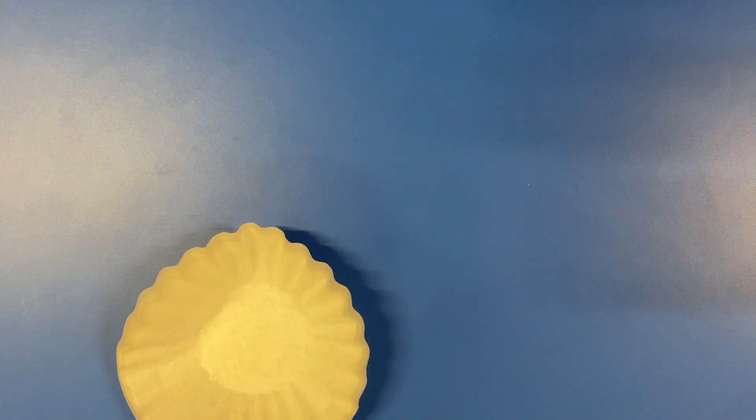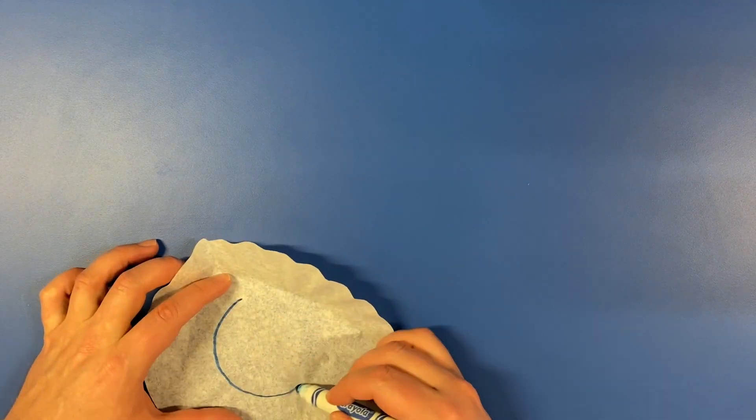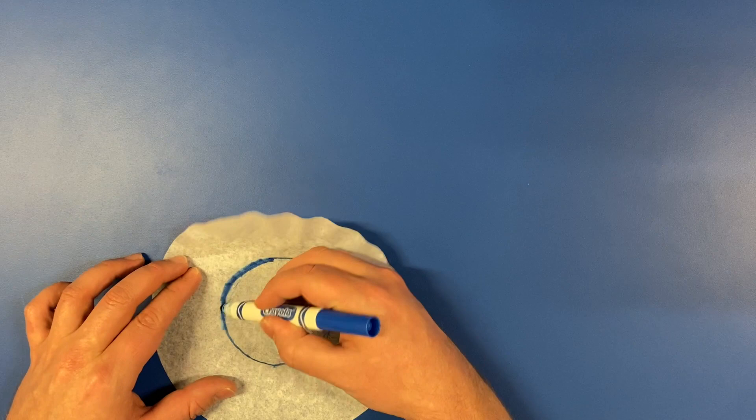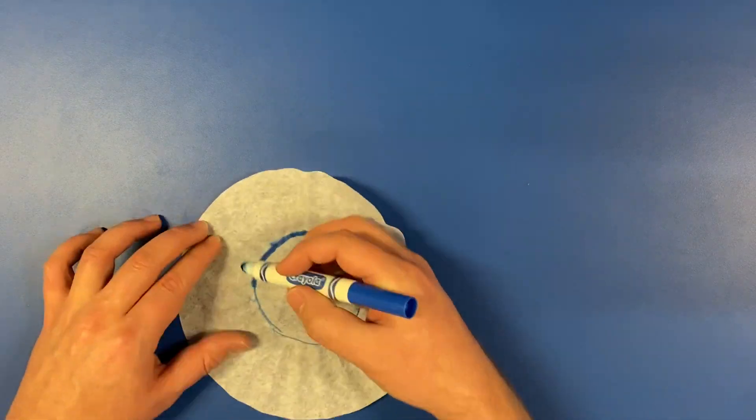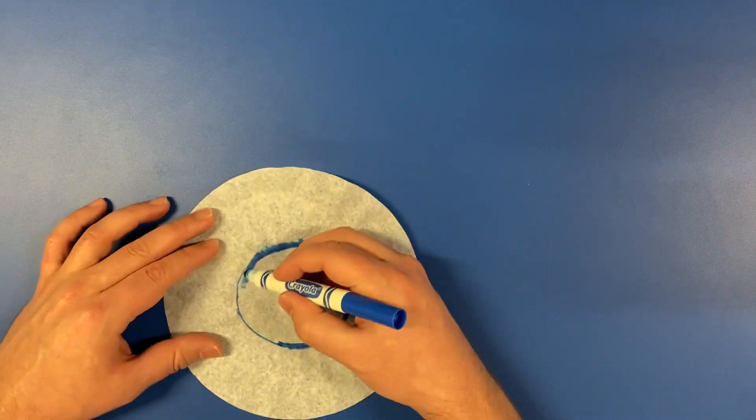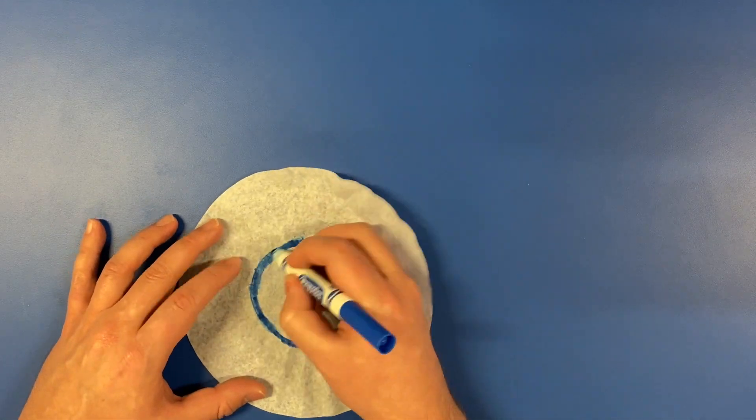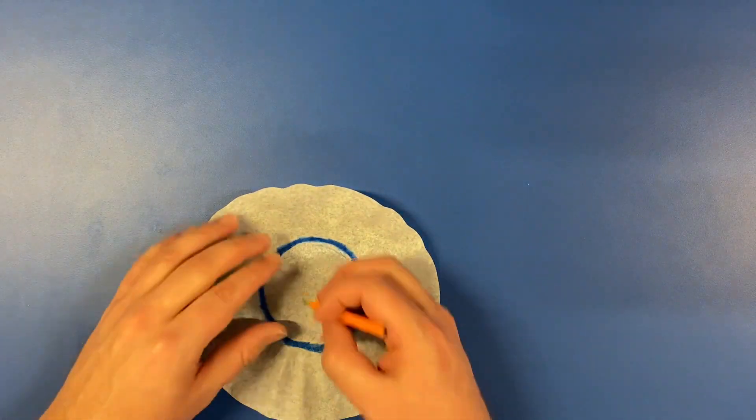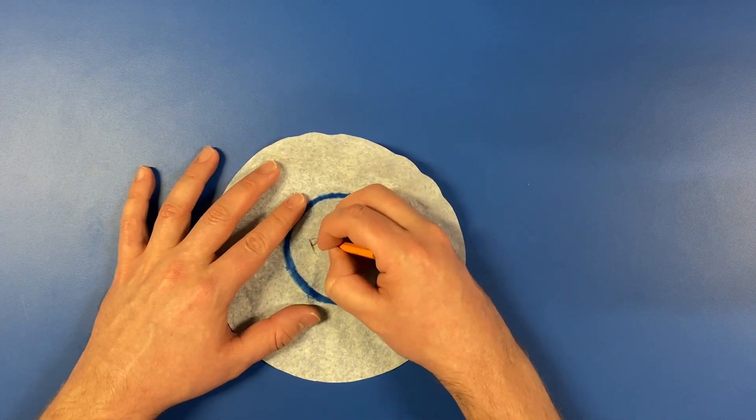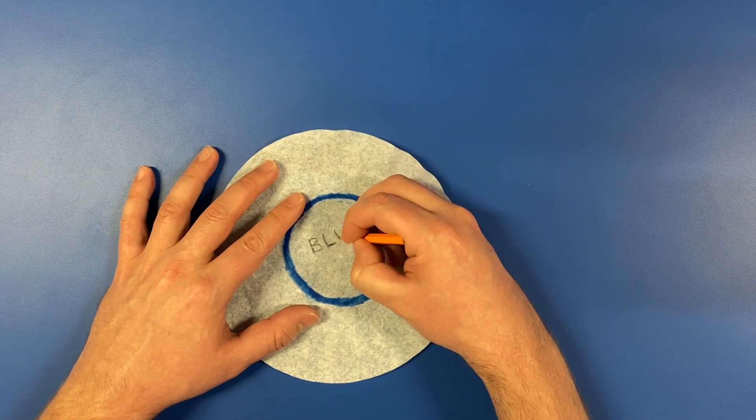Okay. For the last project today, you will need to take a coffee filter and use a marker to draw a circle around the bottom of the inside. Make sure that it is a good thick line with lots of ink. Once we are done with that, use a pencil to write which color we used in the middle of the filter.